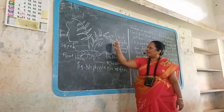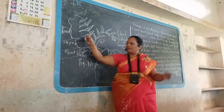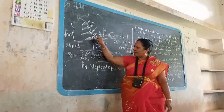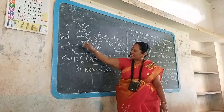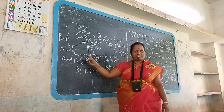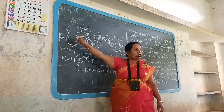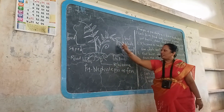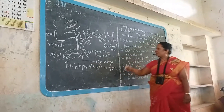Each compound leaf consists of small leaflets. The part of the compound leaf with leaflets is called the frond, while the part without leaflets is called the stipe. These compound leaves are arranged spirally on the rhizome.